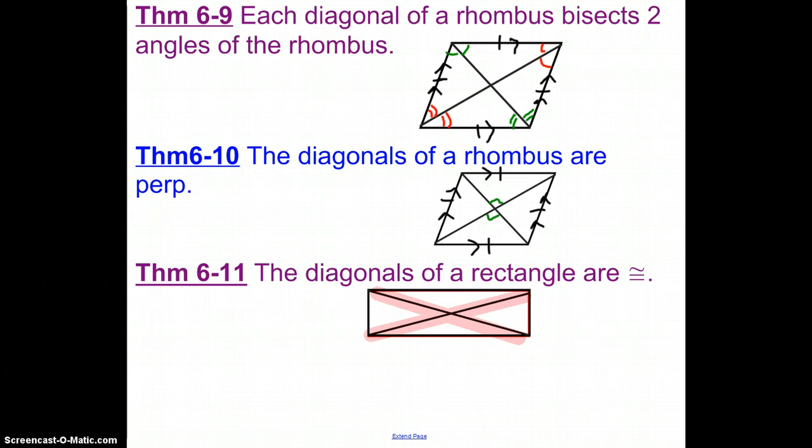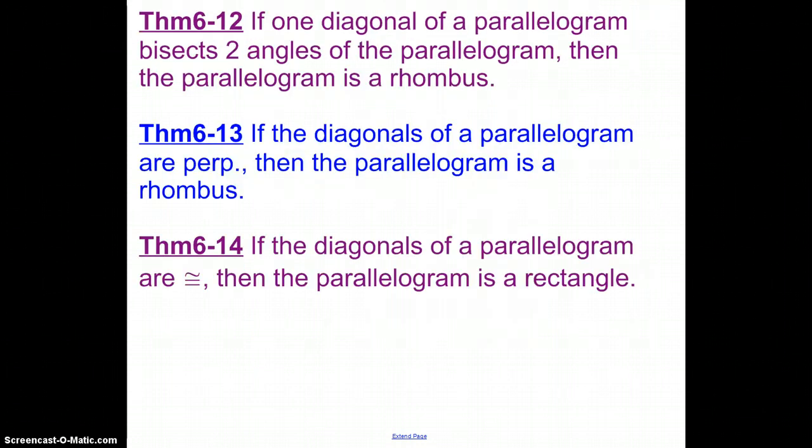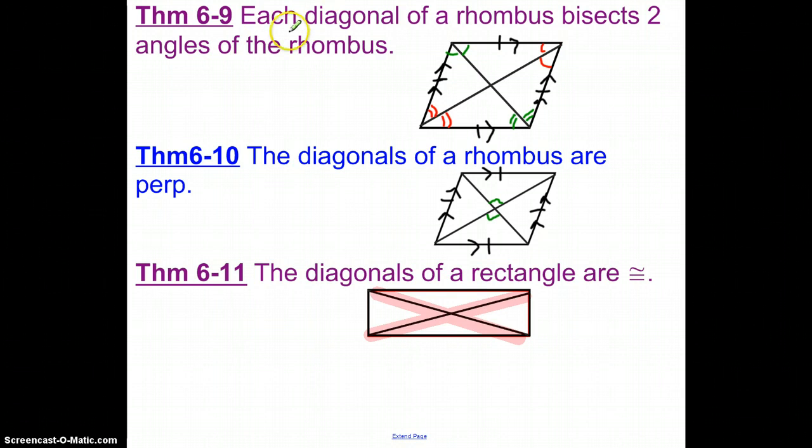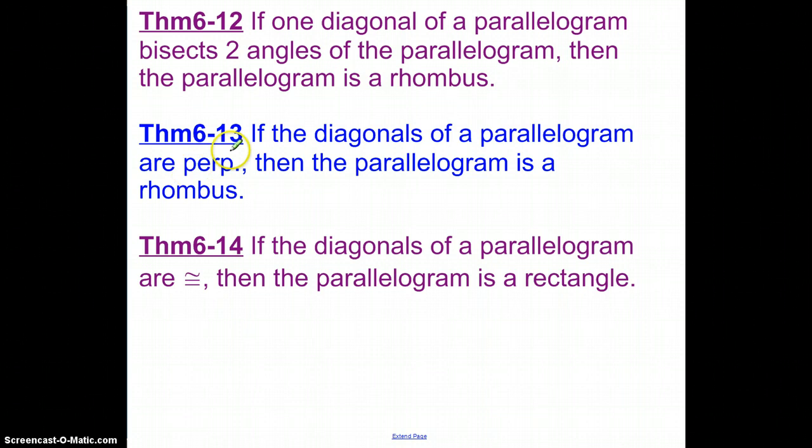Let's take a look at the next set. In this next set, it says that you specifically are starting out with things that you know are parallelograms, and then you're going to go to the rhombus conversation. So if one diagonal of a parallelogram bisects two angles, then it's a rhombus. That's really like going back and looking at this very first one. The second one: if diagonals of a parallelogram are perpendicular, then the parallelogram is a rhombus.